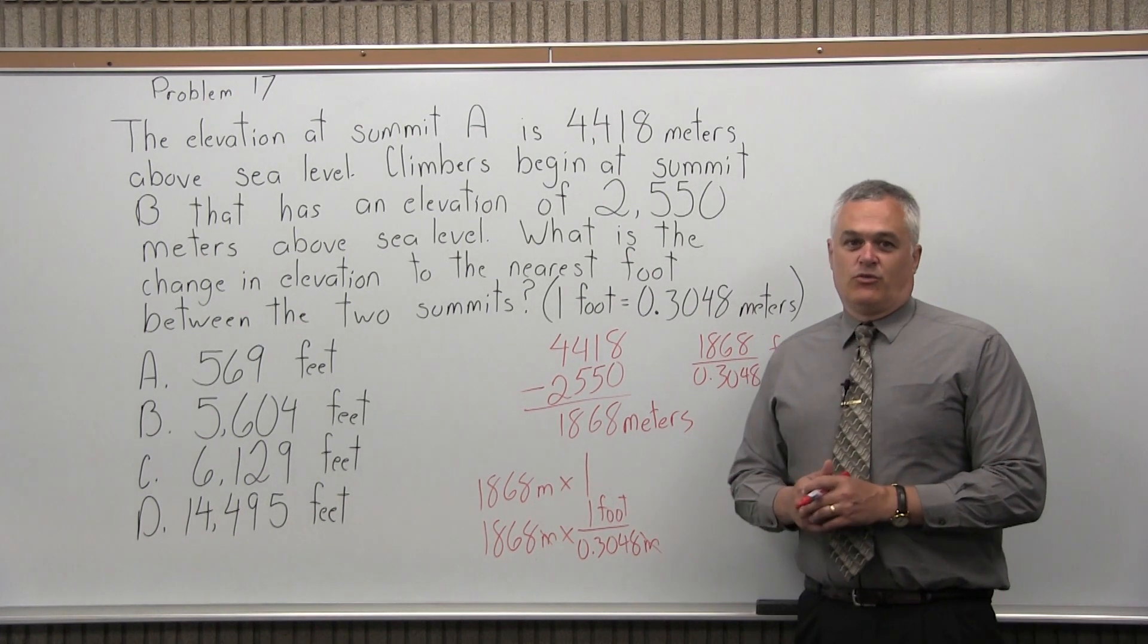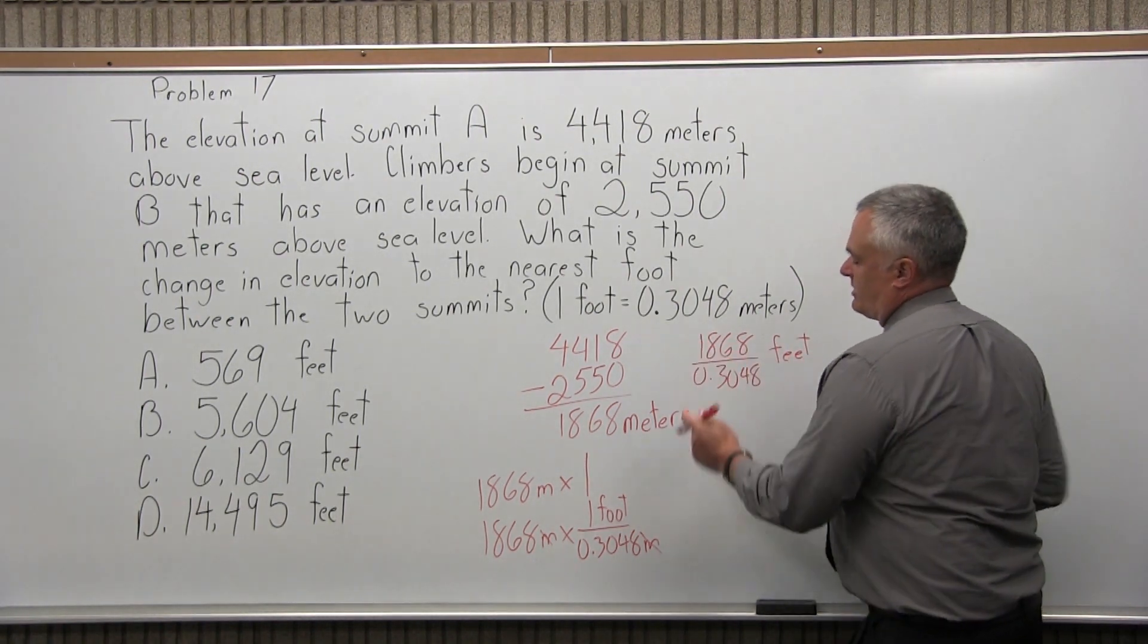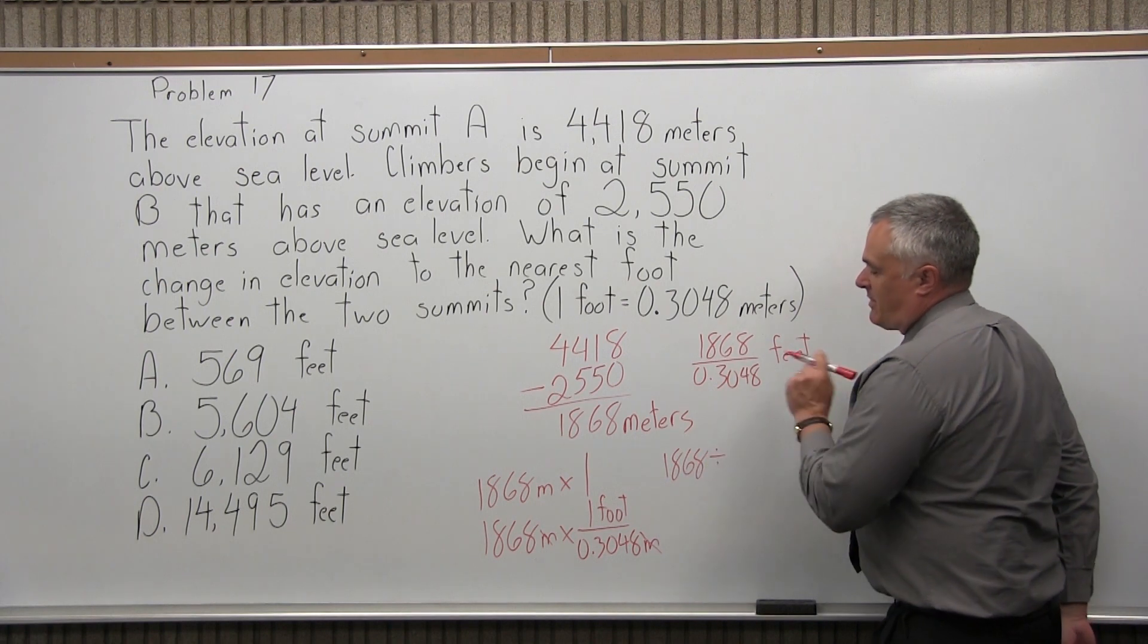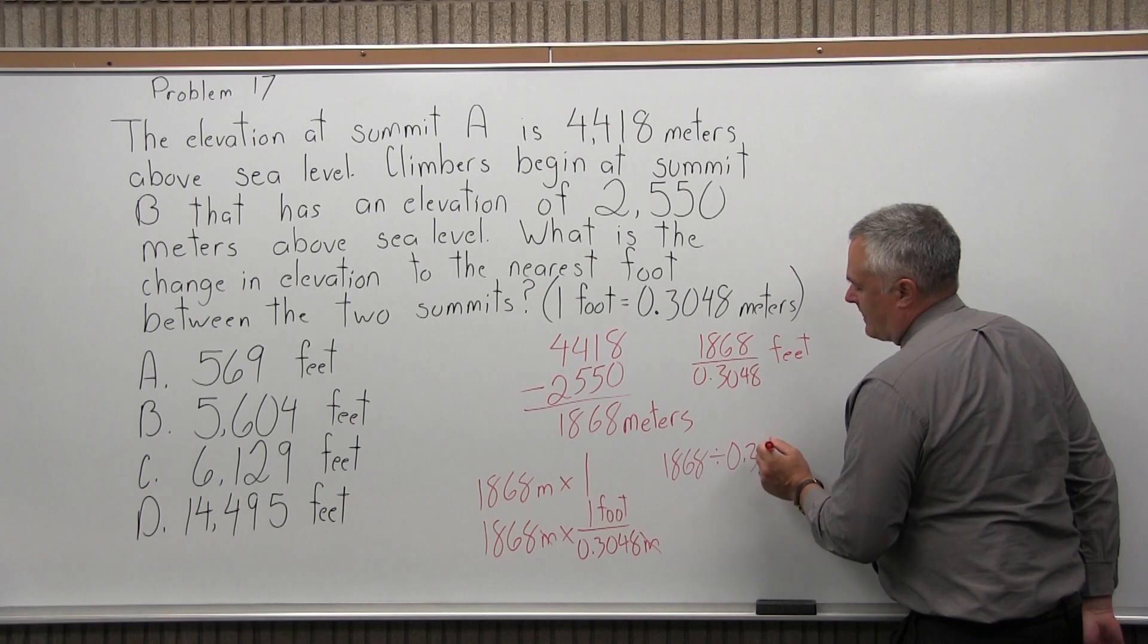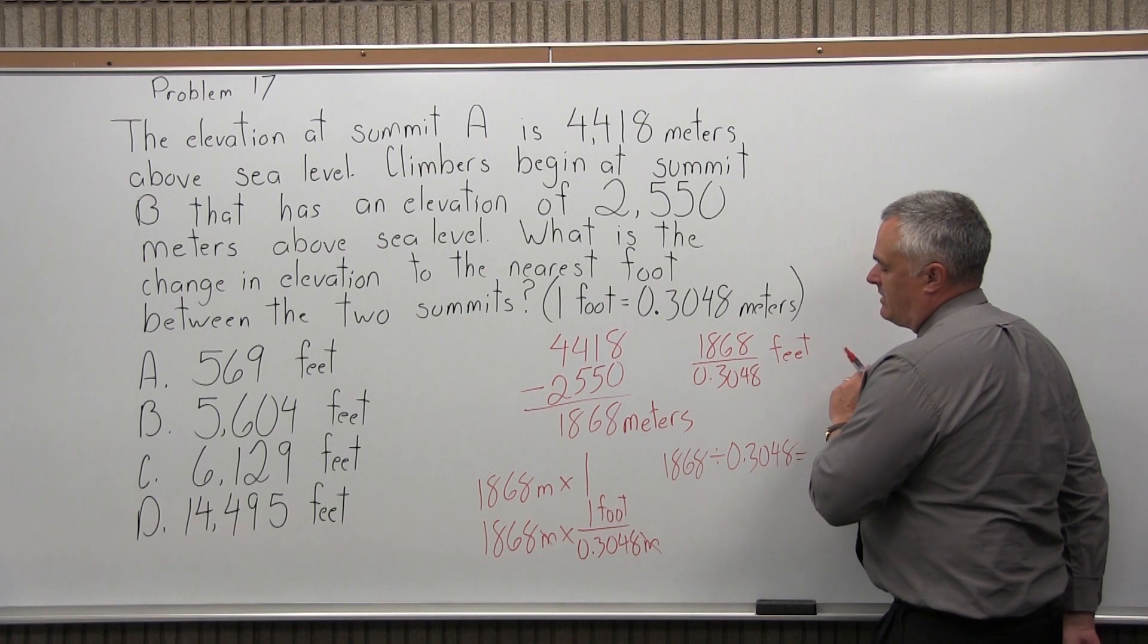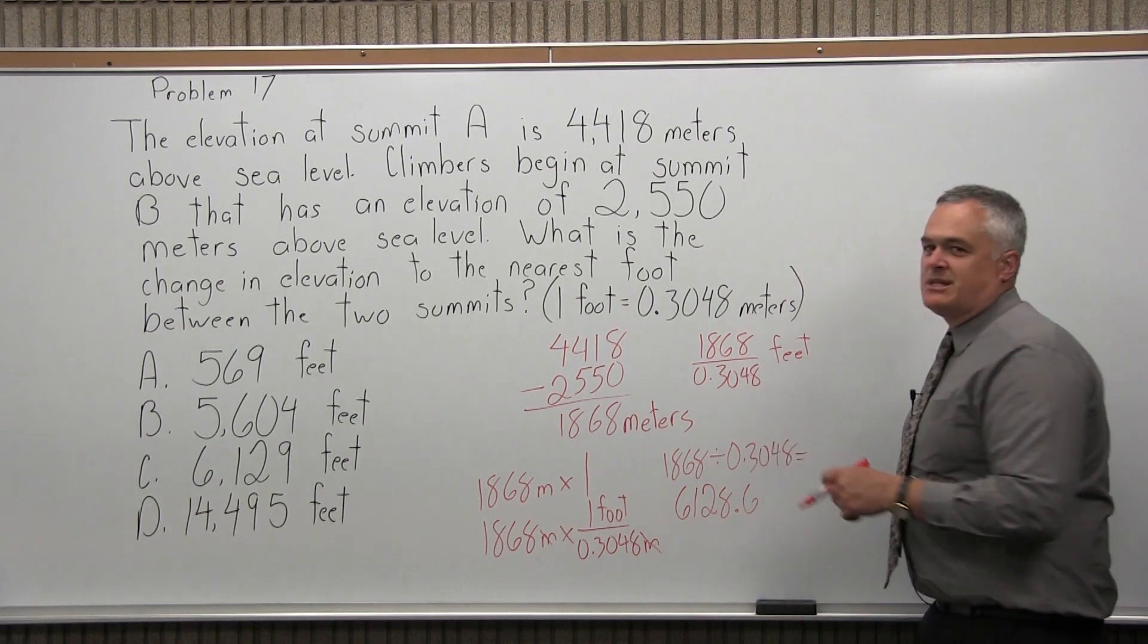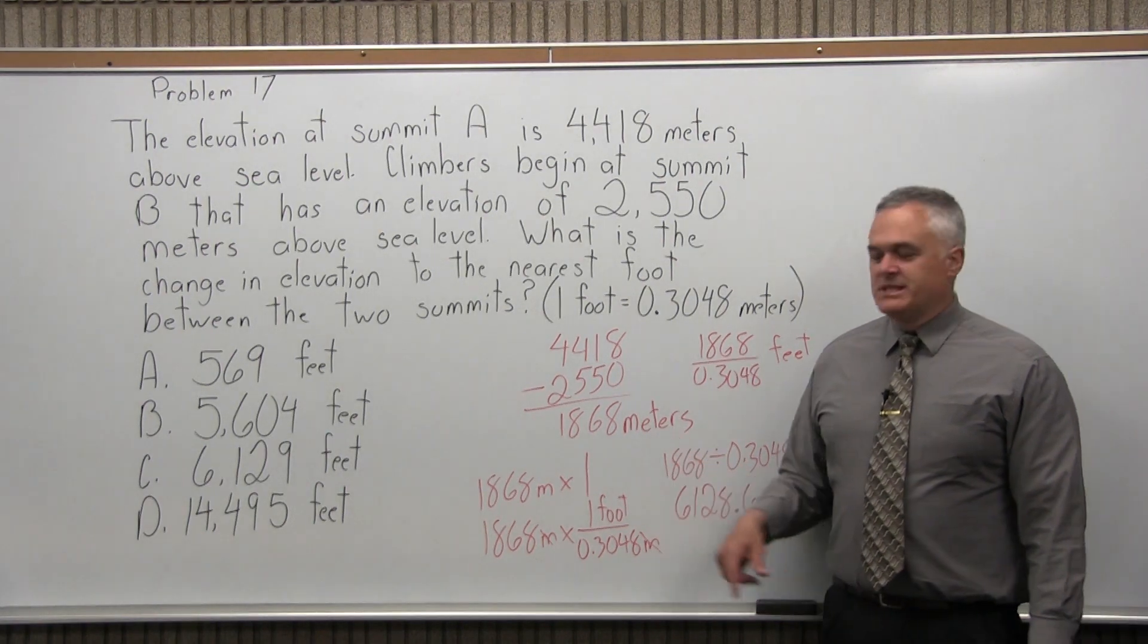Now, unless you're really a whiz with fractions, you're going to want to use a calculator for this. That's not a simple, straightforward thing to reduce. So, if you do have access to a calculator, put the numerator in your calculator first, 1868. Put divide by, because fractions represent a division. And then, put the denominator and press equals. Again, keeping in mind that your answer is going to be in feet. And it comes out to 6128.6 something something something.